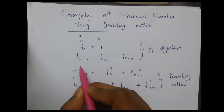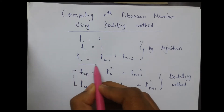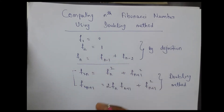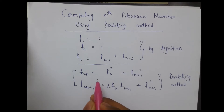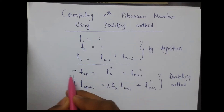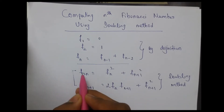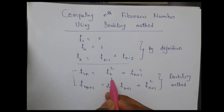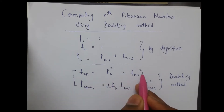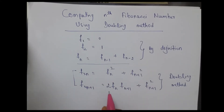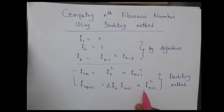We all know the definition of Fibonacci numbers which is given here, and there exists one more relation which I have written here: f(2n) can be written as f(n) plus f(n), and f(2n) can be written as 2 times f(n) into f(n+1) plus f(n+1) squared.